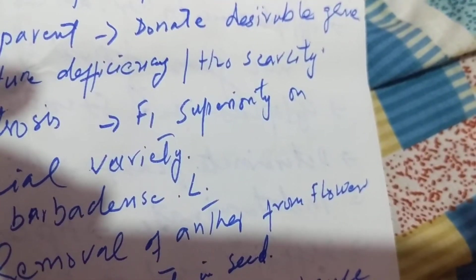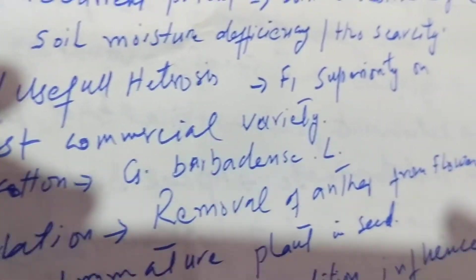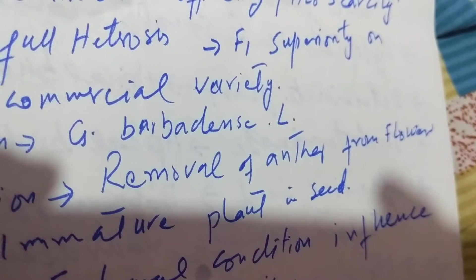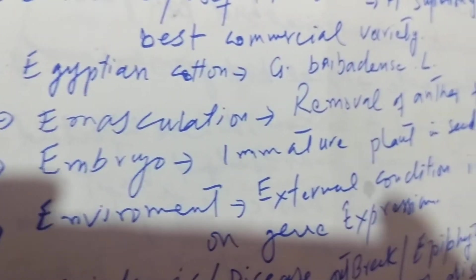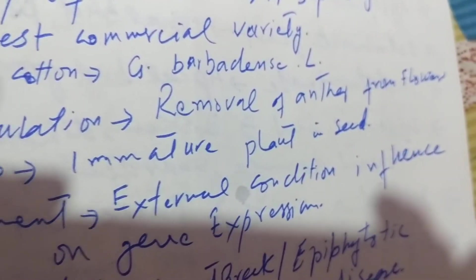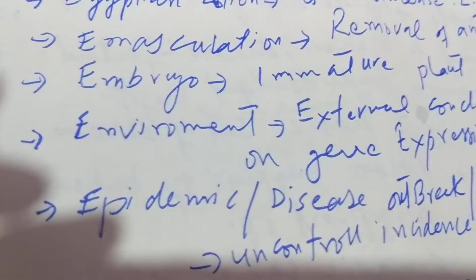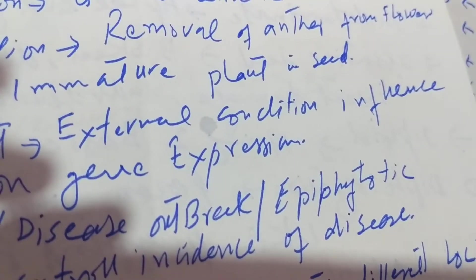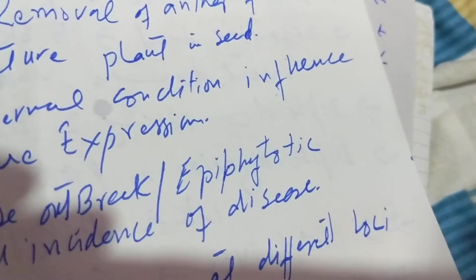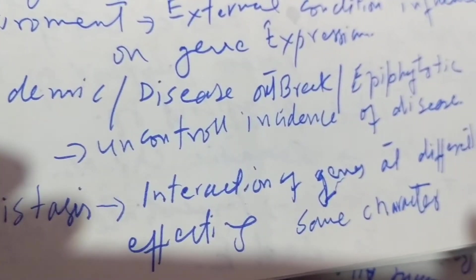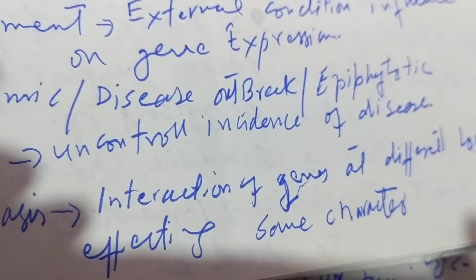Economic or useful heterosis is when F1 superiority is over the best commercial variety. Egyptian cotton is Gossypium barbadense L. Emasculation is the removal of anthers from a flower.